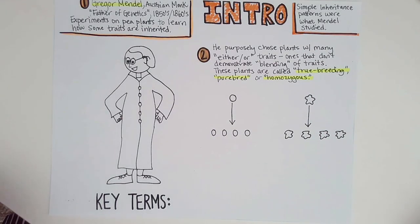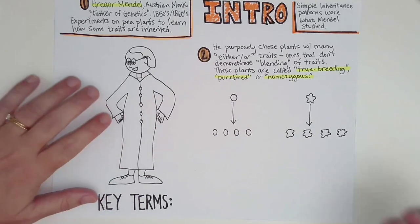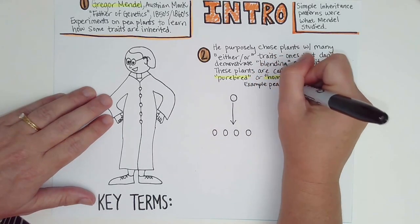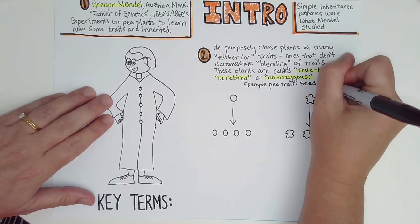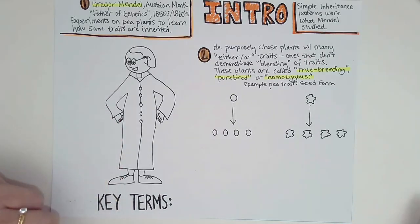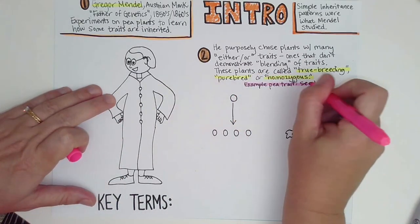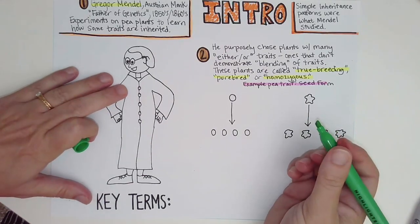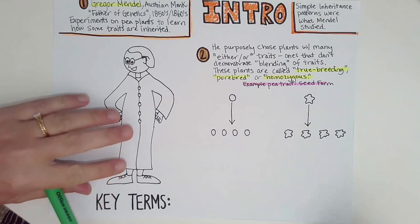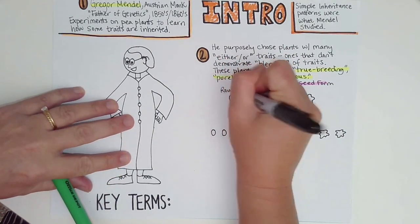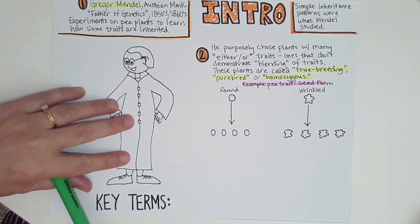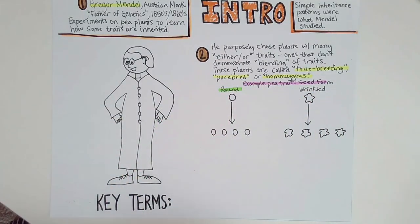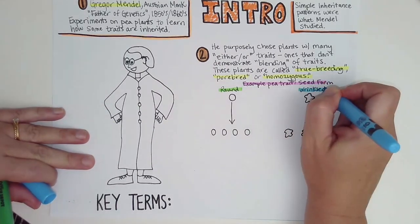One trait that Mendel looked at was seed form. When the plant grew up and produced seeds, he could clearly see if they were round or wrinkled. They were never halfway between — always round or wrinkled. This either-or quality really helped him establish his studies. The seeds were either round-shaped or wrinkled.